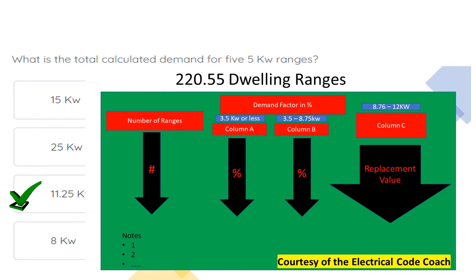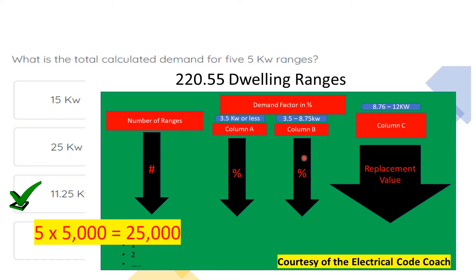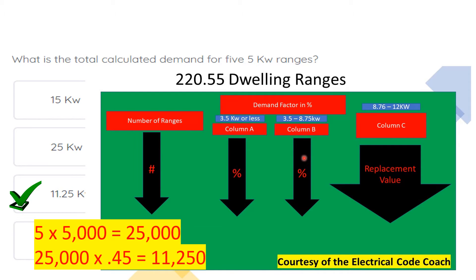We're going to head to Table 220.55. When we first get there, we find out what column our range falls in. In this case, it's a 5kW range, so it falls into column B. Then we start on the left-hand side, come down and find our number of ranges, and find our respective demand factor. We take our five ranges and multiply by 5,000 each, which equals 25,000 VAs. Then we multiply that by our demand factor, giving us a reduced load of 11,250 VAs.